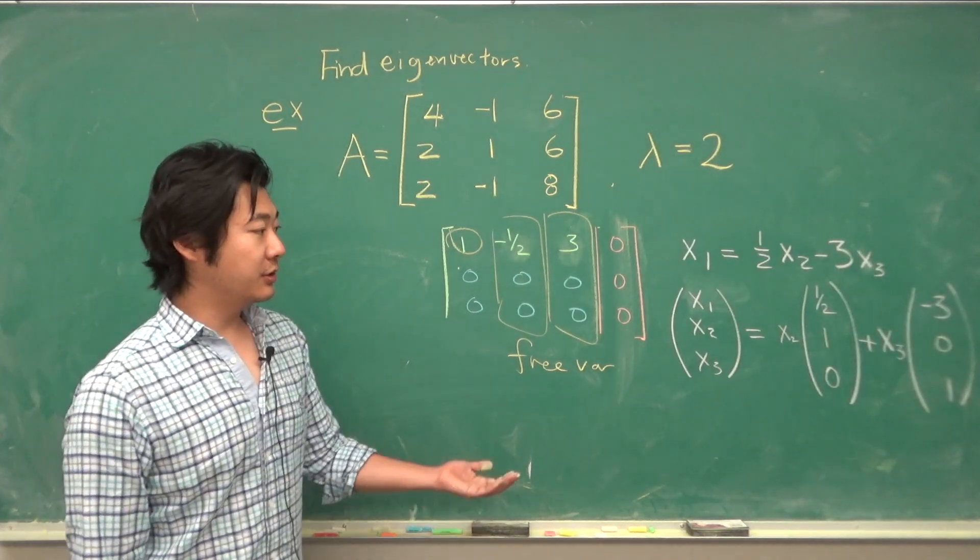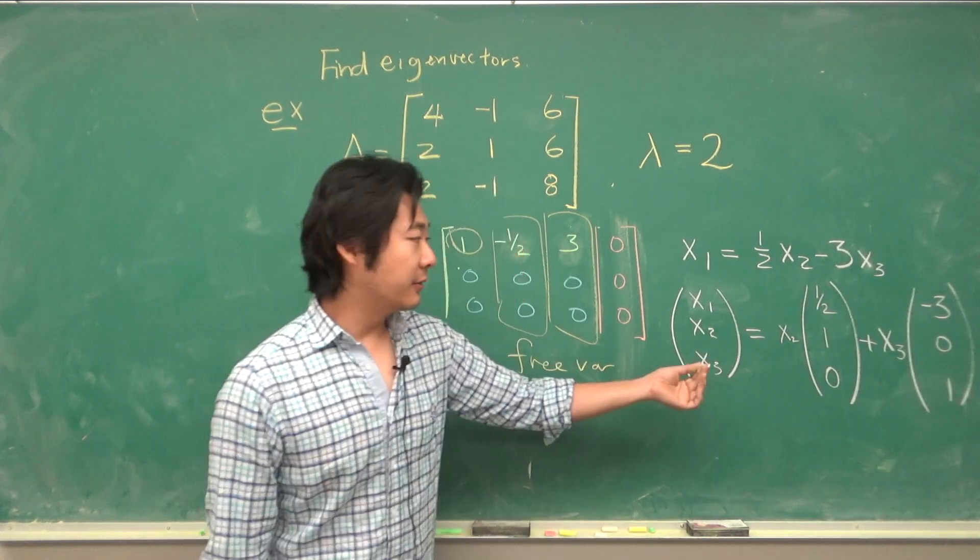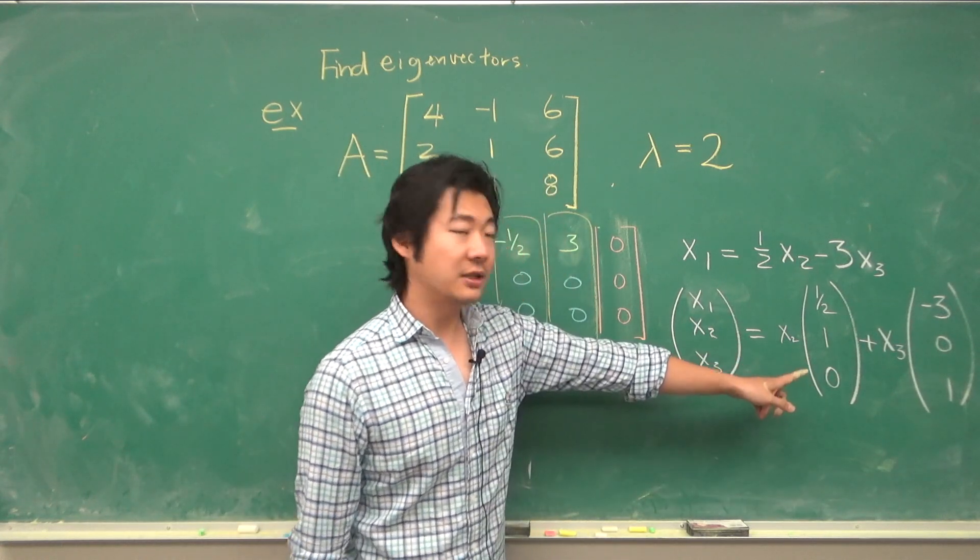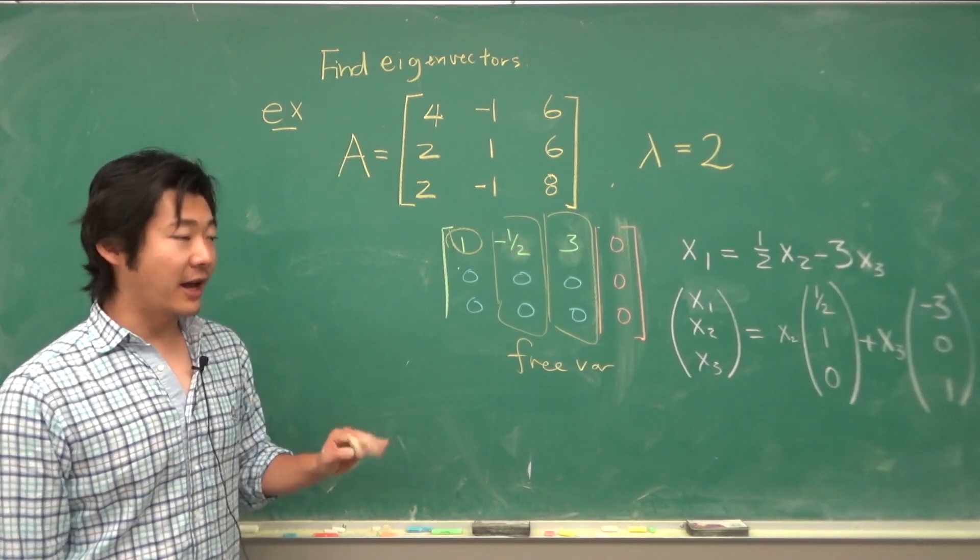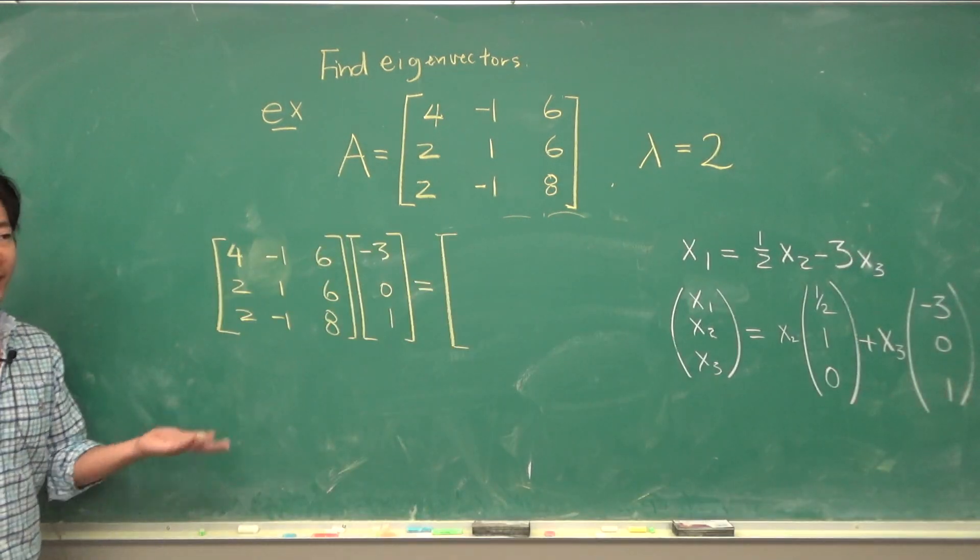So the solution to our homogeneous equation is given by a free variable times this vector plus a free variable times this vector. So it's a linear combination of these two vectors. Those two vectors are eigenvectors. So let's check that they are eigenvectors.